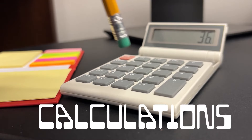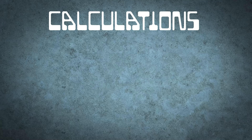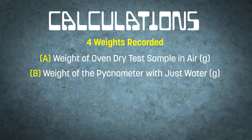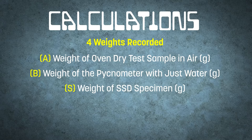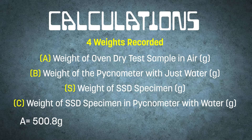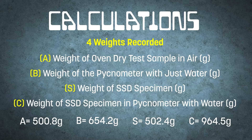Now that you've completed all physical aspects of the test, you can proceed with your calculations. When the test is complete, we should have four weights recorded. A is the weight of the oven dry specimen — 500.8 grams. B is the weight of the pycnometer filled to the calibrated mark with just water — 654.2 grams. S is the weight of the saturated surface dry specimen — 502.4 grams. And C is the weight of the SSD specimen in the pycnometer with water filled to the calibrated mark — 964.5 grams.